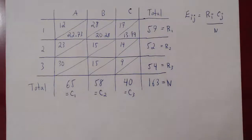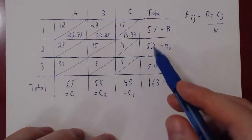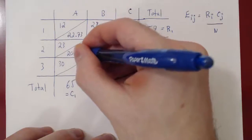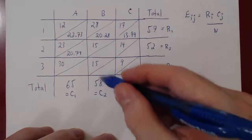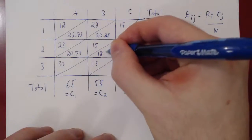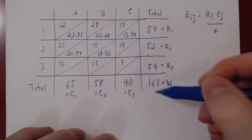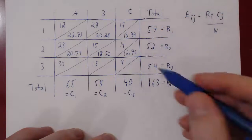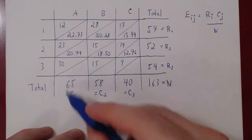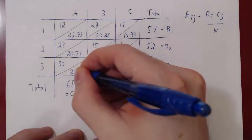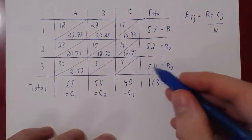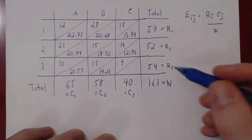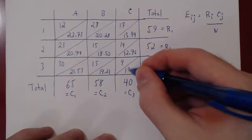Continuing with the expected values: E21 = 52×65/163 ≈ 20.74; E22 = 52×58/163 ≈ 18.50; E23 = 52×40/163 ≈ 12.76. For the third row: E31 = 54×65/163 ≈ 21.53; E32 = 54×58/163 ≈ 19.21; and finally E33 = 54×40/163 ≈ 13.25.